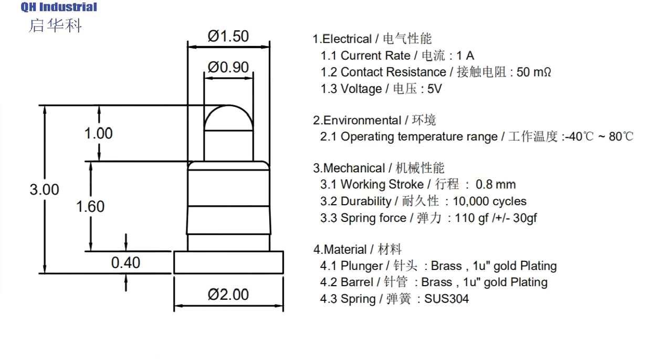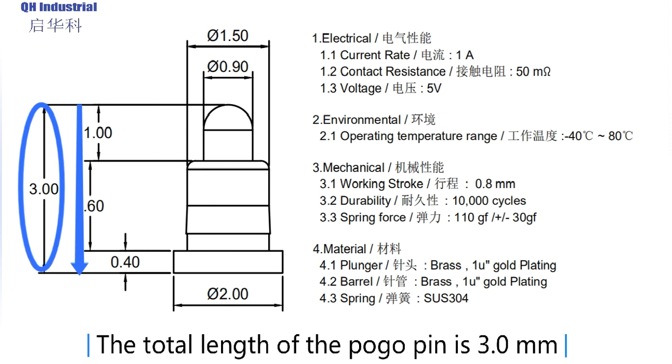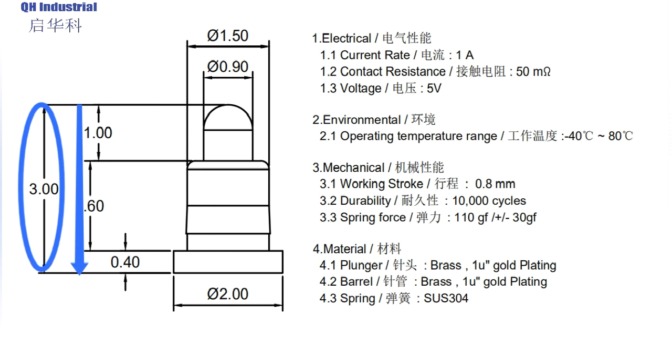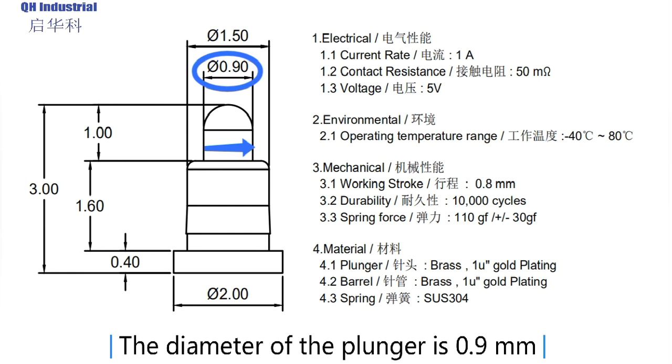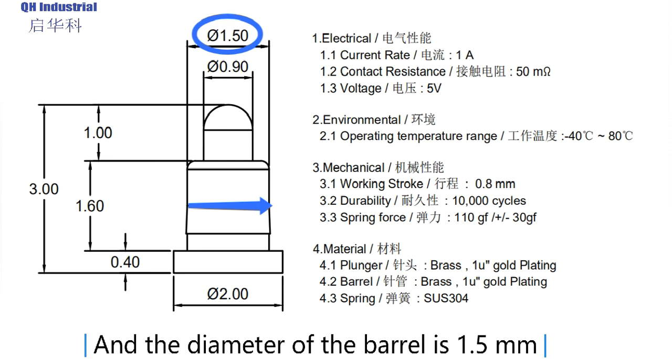As shown in the CAD drawing, the total length of the Pogo pins is 3mm. The diameter of the plunger is 0.9mm, and the diameter of the barrel is 1.5mm.